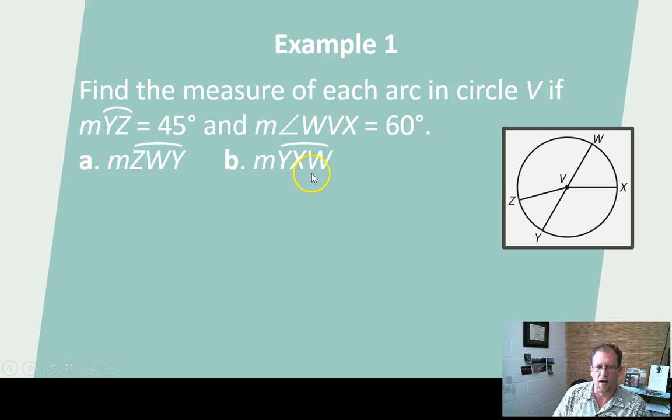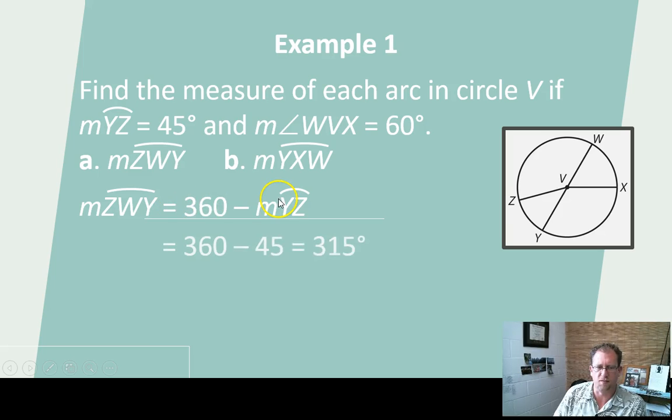And then this one, measure of arc YXW. This is where I'm going to assume that that's a semicircle that looks like a straight line. YXW looks like a straight line to me. So I'd say that that's 180 degrees. Let's see if the example agrees with this. So 360 minus the 45 is 315. And they are saying that that's a semicircle at 180 degrees.